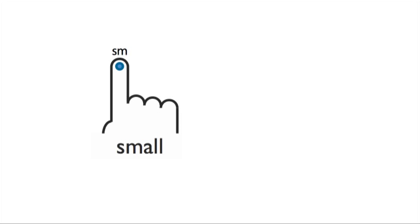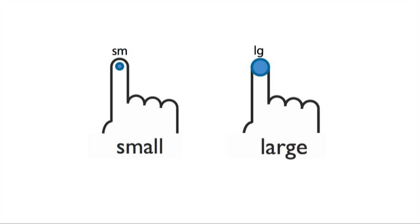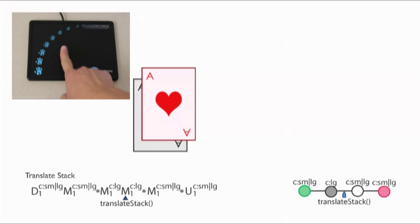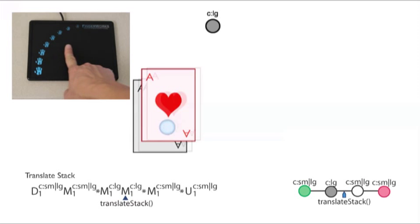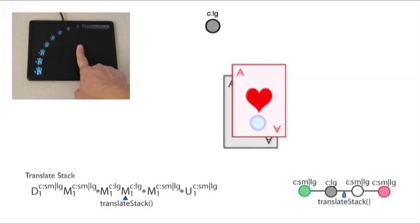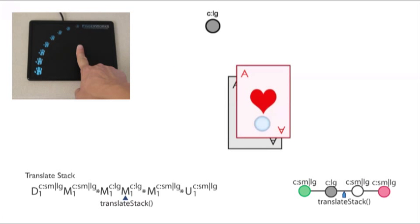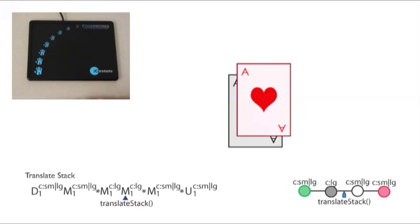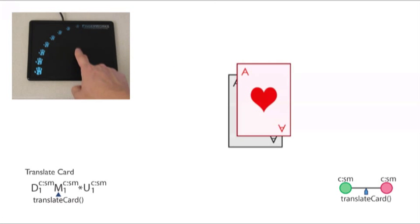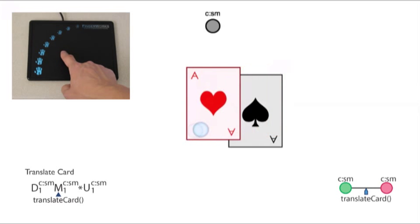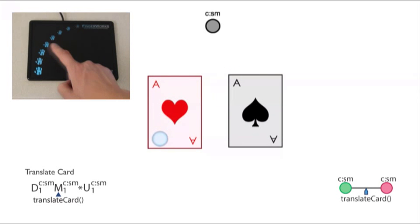The area of a touch is divided into two levels, small area and large area. Here, a large touch area moves the entire stack of cards, while a small touch area moves just the topmost card.